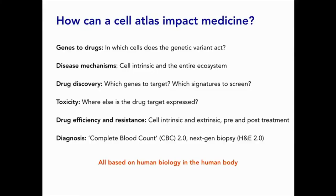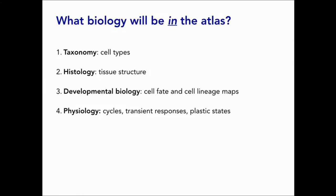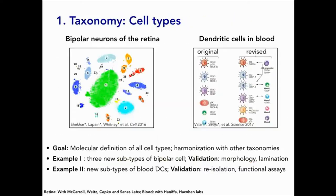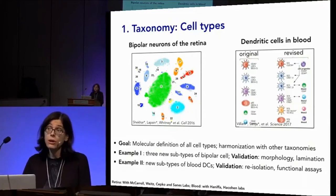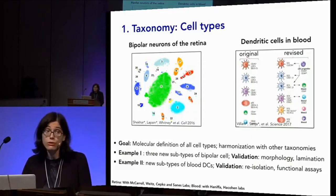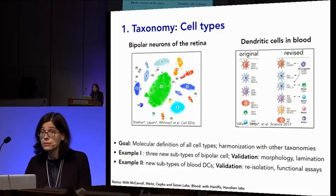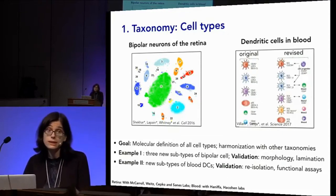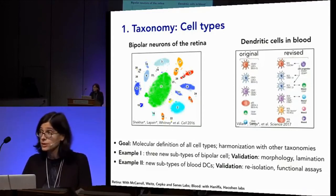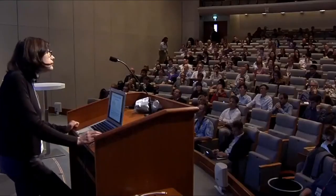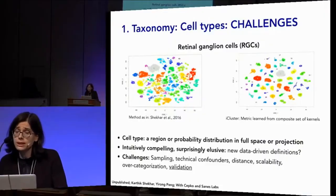I'm going to go through examples in each of these facets — taxonomy, histology, developmental biology, and physiology — which form some of the basic pillars of our understanding of multicellular organisms like humans. Starting with taxonomy, or the question of cell types: one of the things we hope to get out of a human cell atlas is a taxonomy of cells based on their molecular characteristics, harmonized with other ways we characterize cells, like morphology or location. Recent work on neurons in the retina and cells in the blood has used single-cell profiling to discover and validate new cell types.